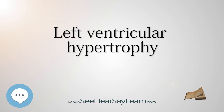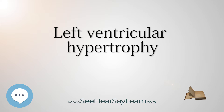The Romhilt-Estes Point Score System: diagnostic greater than 5 points, probable 4 points. ECG criteria points — Voltage criteria: any R or S in limb leads ≥ 20 mm; S in V1 or V2 ≥ 30 mm; R in V5 or V6 ≥ 30 mm: 3 points. ST-T abnormalities: ST-T vector opposite to QRS without digitalis: 3 points; with digitalis: 1 point. Negative terminal P wave in V1 ≥ 1 mm depth and 0.04 sec duration, indicating left atrial enlargement: 3 points. Left axis deviation, QRS of minus 30 degrees or more: 2 points. QRS duration ≥ 0.09 sec: 1 point. Delayed intrinsicoid deflection in V5 or V6 > 0.05 sec: 1 point.